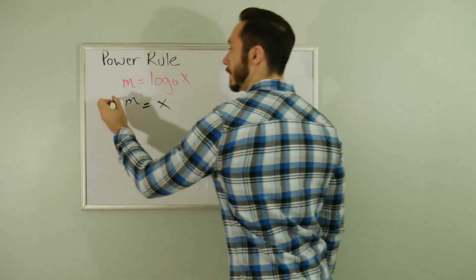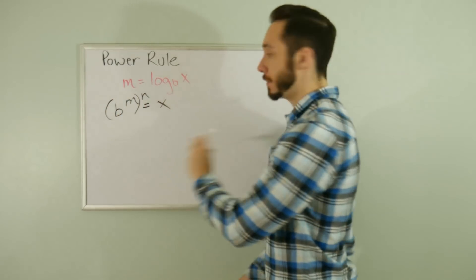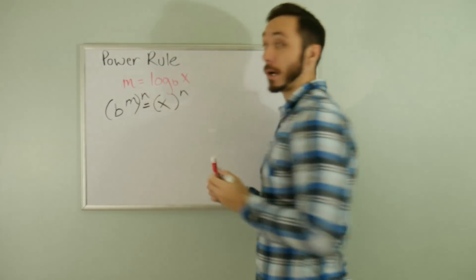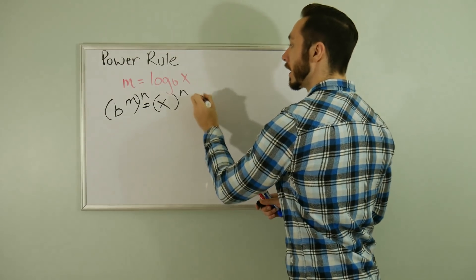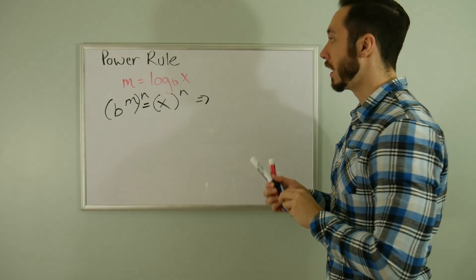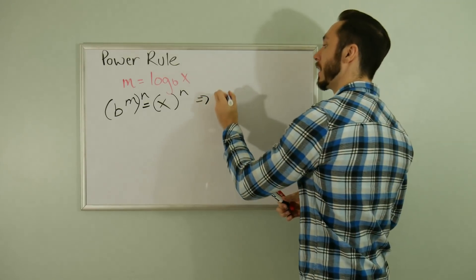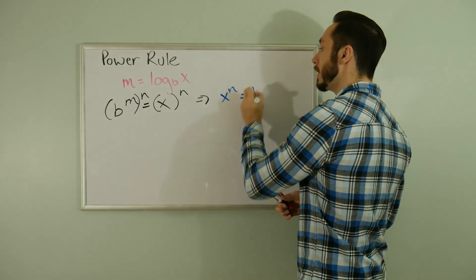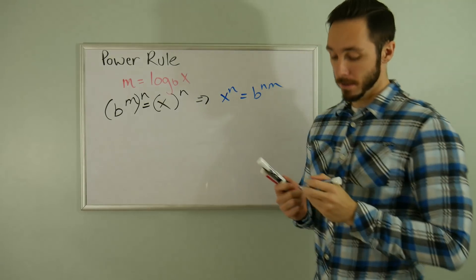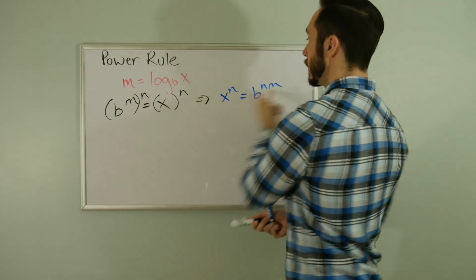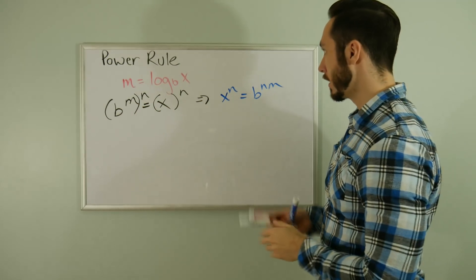What I want to do is raise both sides to the power of N. This will be raised to the power of N, and I'll get a new statement: X to the power of N equals B to the power of NM. I can rewrite the order of M and N.